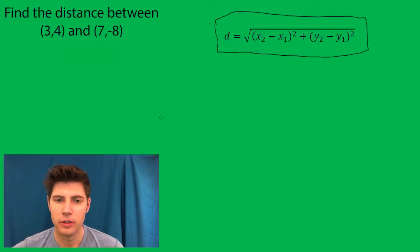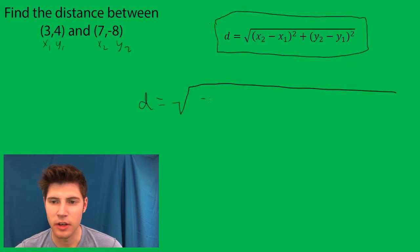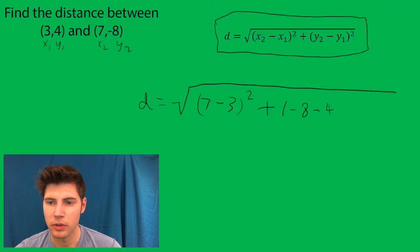So the distance between these two points: this is x1, this is y1, this is x2, this is y2. It's 7 minus 3, I'm just plugging the points in, squared, plus negative 8 minus 4 squared.